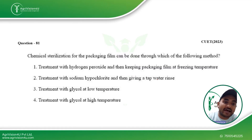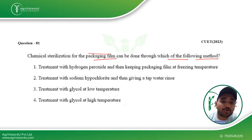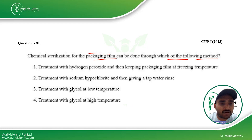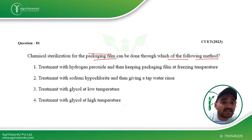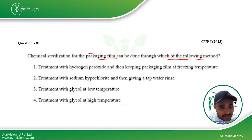Coming straight away to the first question: chemical sterilization for the packaging film can be done through which of the following methods? The food industry is mainly focused on processing food products and not making the packaging material. Packaging material is usually third-party sourced — from some polymer manufacturing company or paper company — and there can be chemicals sticking on the surface which may be harmful for the food material.